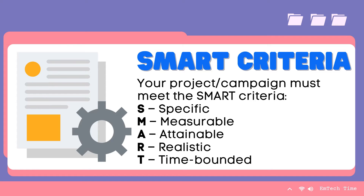A stands for Achievable. Is the goal achievable considering the time scale set and the resources available? What will stop you from achieving this goal? Do you have the resources to achieve your goal? R stands for Relevant. How committed are you to attaining this goal? Do you have any reservations? To what extent is this goal aligned with your interest? What might be the consequences if you do not achieve this goal?